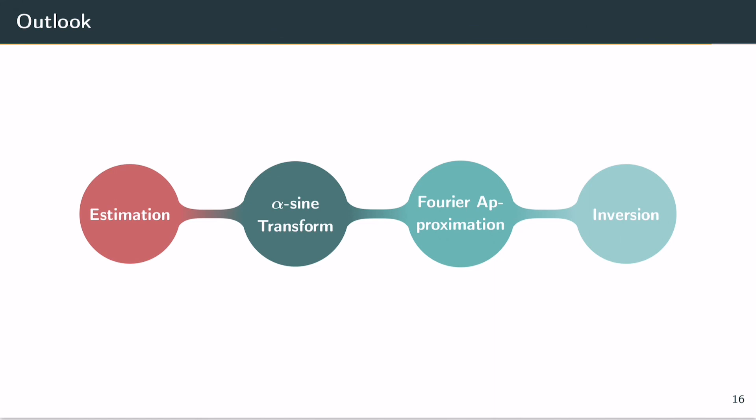In the context of our stochastic process I've made some assumptions: that we know alpha, we know the scale parameters, and we know the codifference function. The question that remains is how do we estimate alpha, the scale parameter, and the codifference function from the process itself — and this is something we're working on right now.